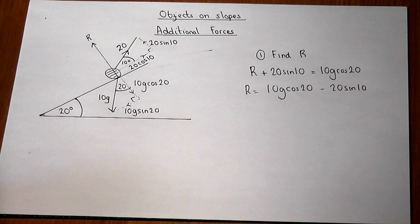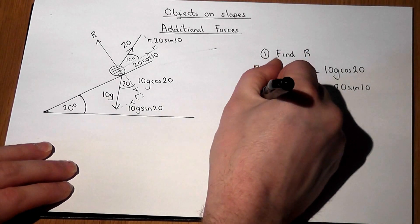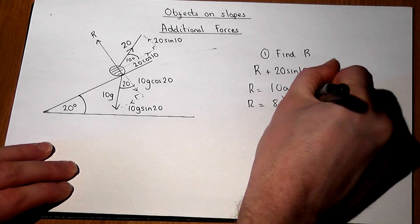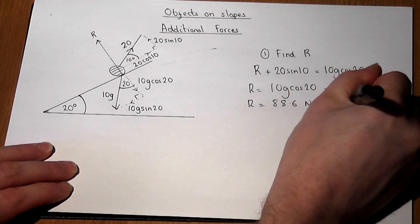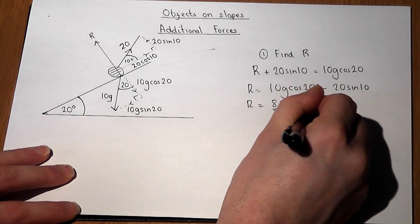So if we enter this into our calculator, we end up with R equal to 88.6 N to 3 significant figures. So we've found R.